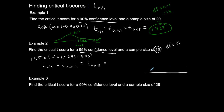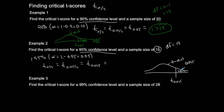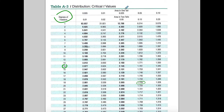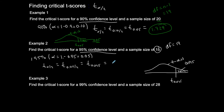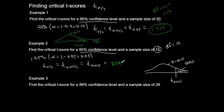On a Student t-distribution curve, I want the critical t-score with an area of 0.025 in the right tail. Degrees of freedom are 14, so going to Table A3: degrees of freedom 14 is here, and area in one tail is 0.025. Lining those up, I get 2.145. That is my critical t-score: 2.145.